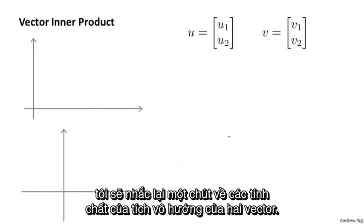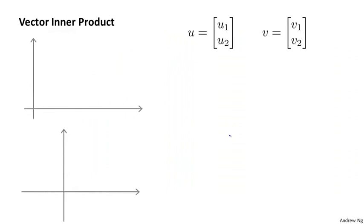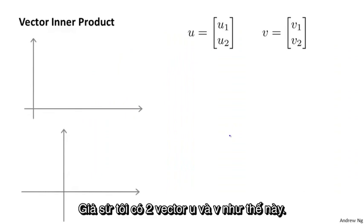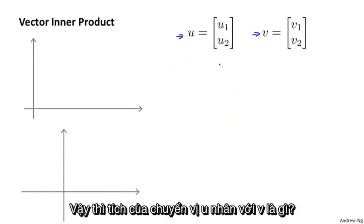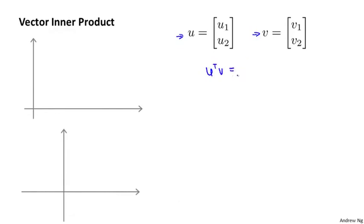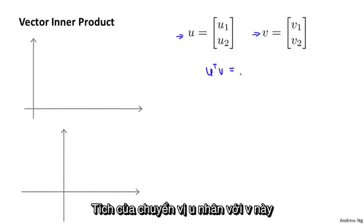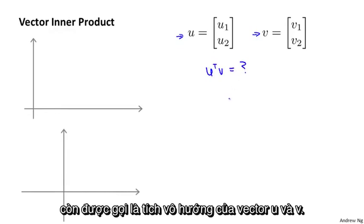In order to get started, let me first remind you of a couple properties of what vector inner products look like. Let's say I have two vectors u and v that are both two-dimensional vectors. Then let's see what u transpose v looks like. u transpose v is also called the inner product between the vectors u and v.